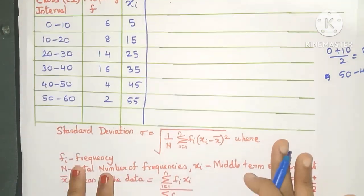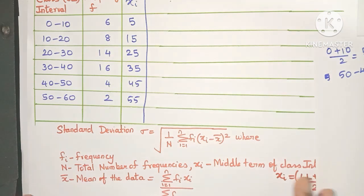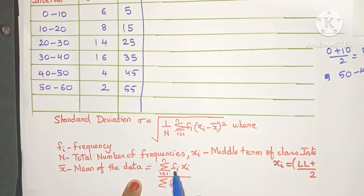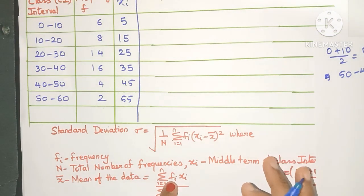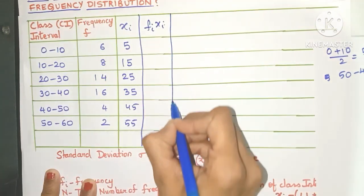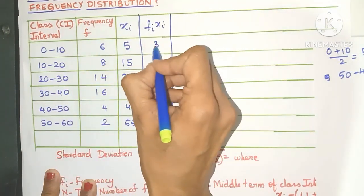So we have got the xi values which we will need in the formula. Now there is also x bar, which is nothing but mean of the entire data. The formula is sigma fi xi divided by sigma fi. Now what is sigma? Yes, it's a Greek symbol which means summation. So let's multiply fi and xi. Let's create the next column.